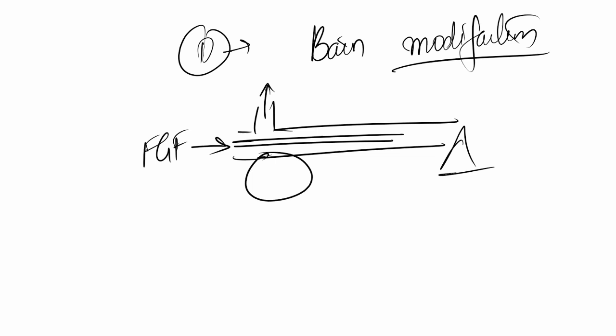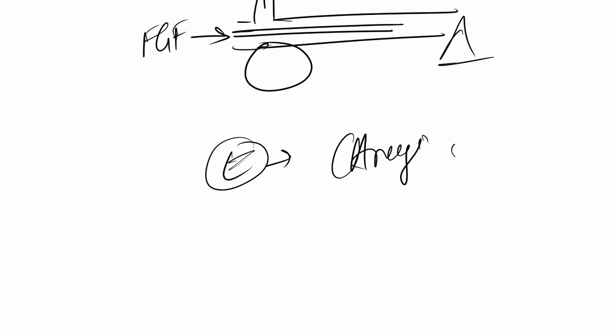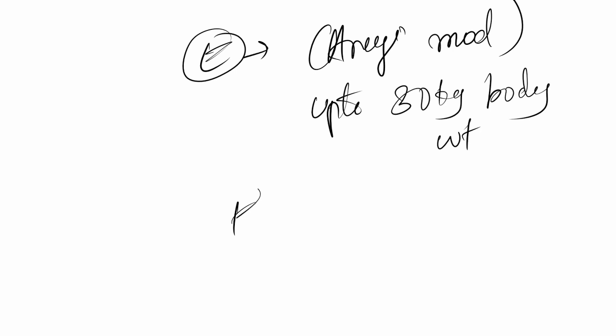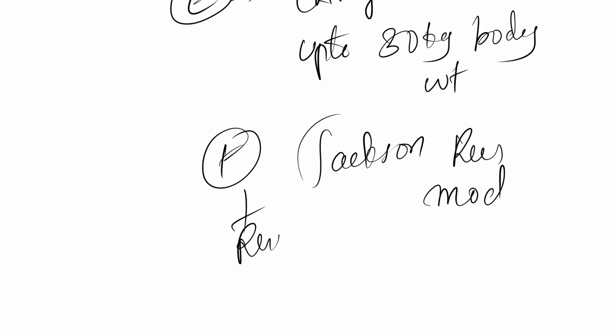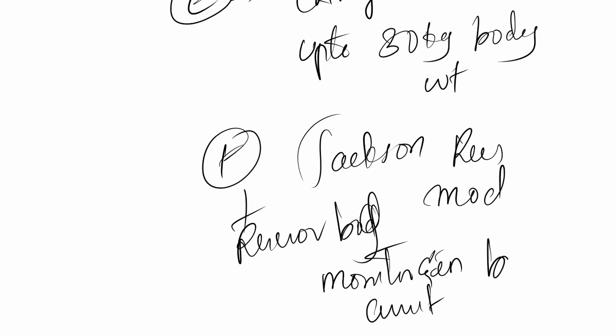Circuit E is called the Ayre's modification and is used in children up to 30 kilograms of body weight. Circuit F is called the Jackson-Rees modification — it is essentially E with an additional reservoir bag, which allows you to monitor and assist in breathing. However, F requires a high gas flow compared to the others.